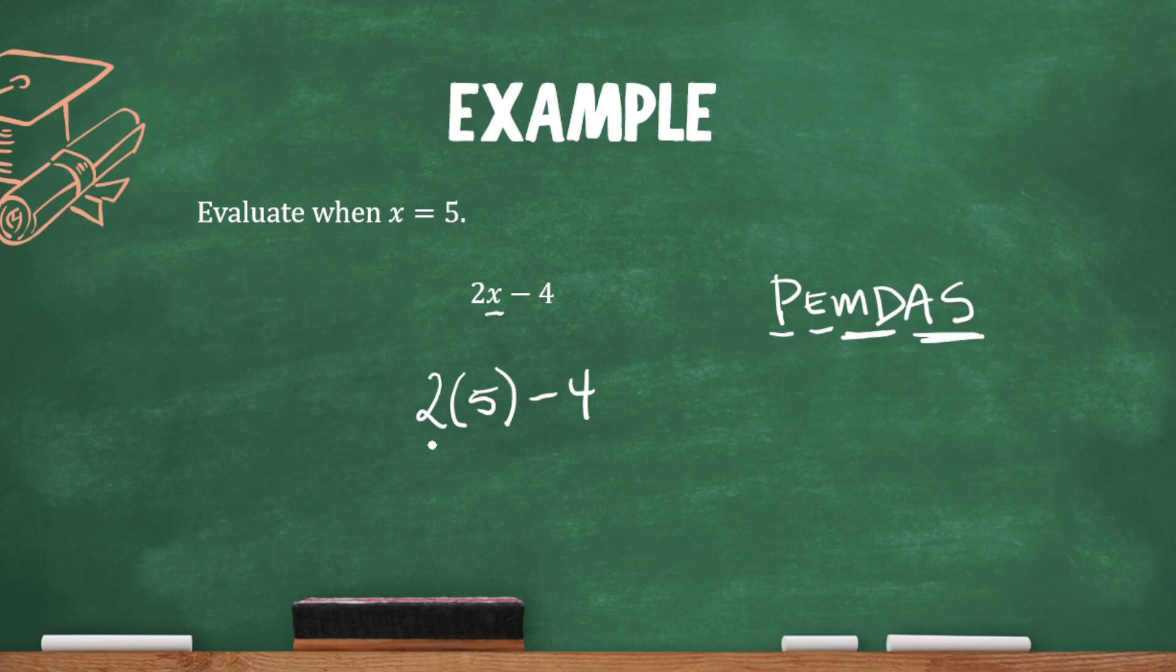So we've got multiplication here, which comes before subtraction, so let's do it. 10 minus 4, and finally addition and subtraction is all that's left. So our answer is 6.